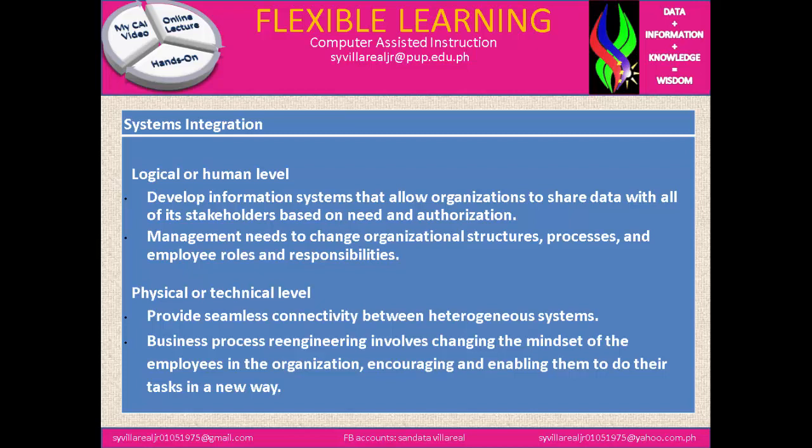Another aspect is that management needs to change organizational structure, processes, and employees' roles and responsibilities. The second one, the physical or technical level, provides seamless connectivity between heterogeneous systems. Additionally, business process re-engineering involves changing the mindset of employees in the organization, encouraging and enabling them to do their tasks in a new way.